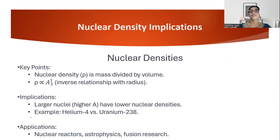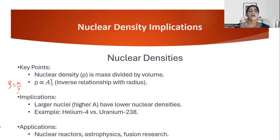Finally, nuclear density: density equals mass over volume, and volume of a sphere is (4/3)πr³. Substituting the nuclear radius formula, we can see the inverse relation of nuclear density with radius. This implies that larger nuclei with a higher mass number have lower nuclear density, while smaller nuclei are very tightly bound and have higher nuclear density.